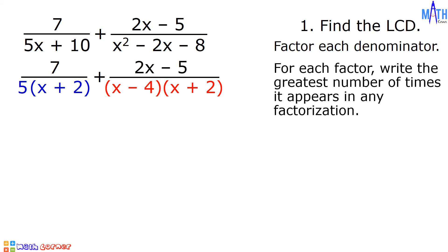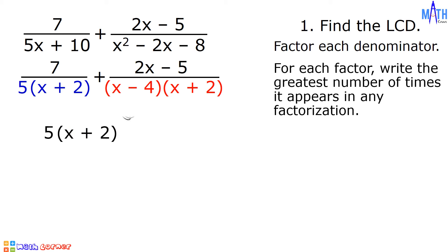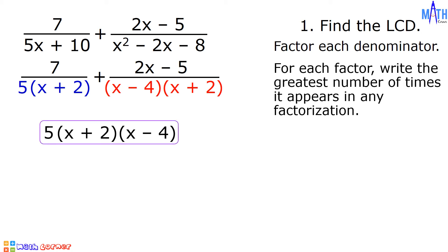Next, for each factor, let us write the greatest number of times it appears in any factorization. The greatest number of times 5 appears is once. The greatest number of times x plus 2 appears in any factorization is once. The greatest number of times x minus 4 appears is also once. And we have 5 times quantity x plus 2 times quantity x minus 4 as the LCD. Let us leave the LCD in factored form.